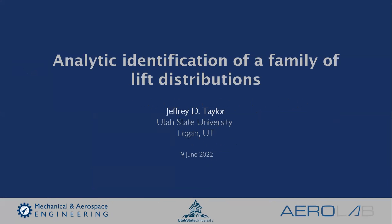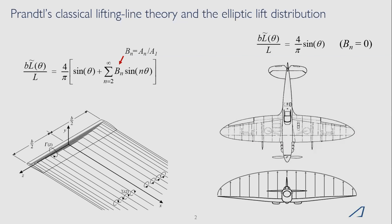I'm going to give a little bit of quick background on how we identified a family of lift distributions that we used in our analytic work on this project. As with most of the analytic work on this project, we're going to start with lifting line theory — Prandtl's classical lifting line theory. Using this, we can relate the lift distribution on a wing to the wing planform shape and the wing twist. When we talk about twist, we're talking about geometric twist — actually twisting the wing — and aerodynamic twist, which is essentially changing the camber of airfoil sections using flaps.